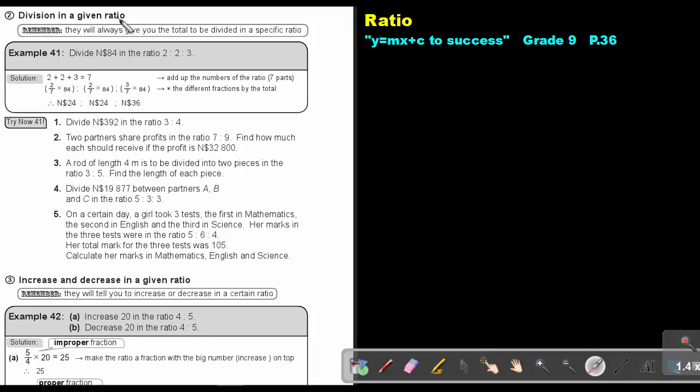Division in a given ratio. Remember, they will always give you the total to be divided in a specific ratio. This is very important because as soon as we are going to do number 4, then you can get confused with number 2. So they will give you the total. So divide 84, that's the total, in the ratio 2 to 2 to 3.